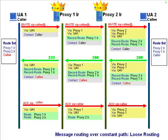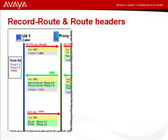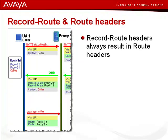So we know the new rule: if a Route header exists within a request, the request is routed to the address in the topmost Route header, not the address in the normal Request-URI. We've seen from this scenario that a Record-Route header always generates a Route header in subsequent requests — in other words, whenever a server adds a Record-Route header, a Route header will always be included in the subsequent request.